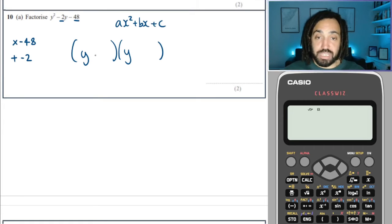Okay. So, first thing I can say is that it has to have a Y and a Y, because it's just a Y squared. They have to times to make a negative, but add to make a negative as well. So it must be one positive, one negative. That's the only way that two numbers could times to make a negative.